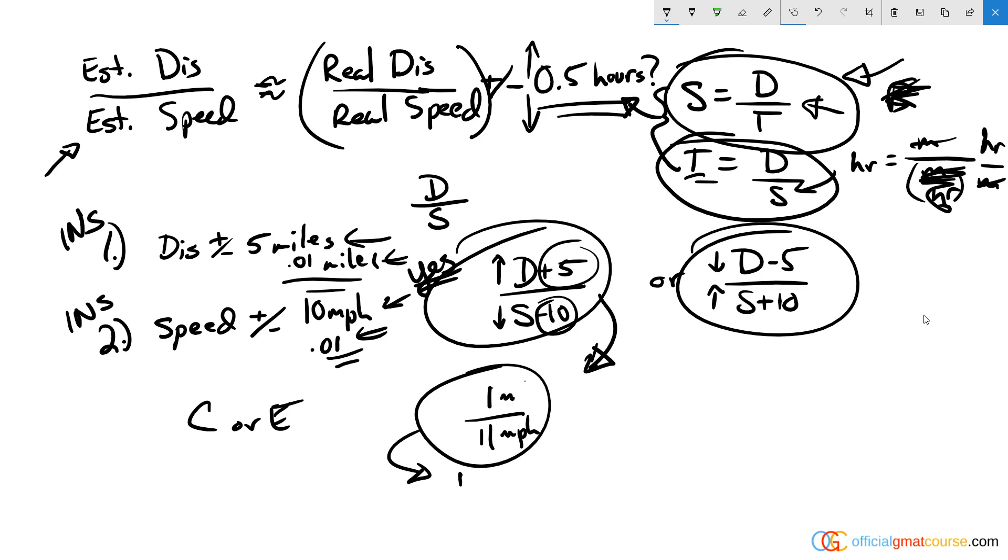If we plug those numbers in, the real time is 1/11 hour. Now if I follow this process of maximizing the addition of the top, I'll get 6 on top, and then subtract 10 from the bottom, I'll get 1. Now it's going to take 6 hours, and that is a difference of more than 0.5 hours.